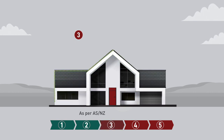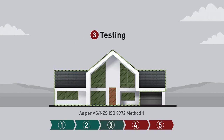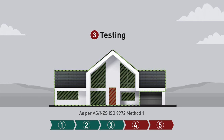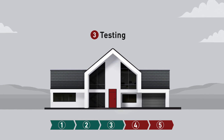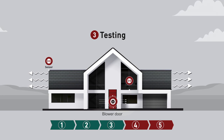Step 3: Testing. Firstly, prepare the house for testing. Close all windows, doors, trapdoors and ventilation and other openings. Blower door testing experts will then mount a blower door assembly at a door in the building envelope and connect pressure measuring devices to the inside and outside of the house.